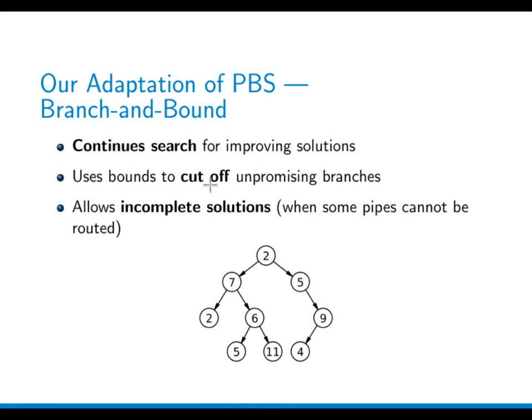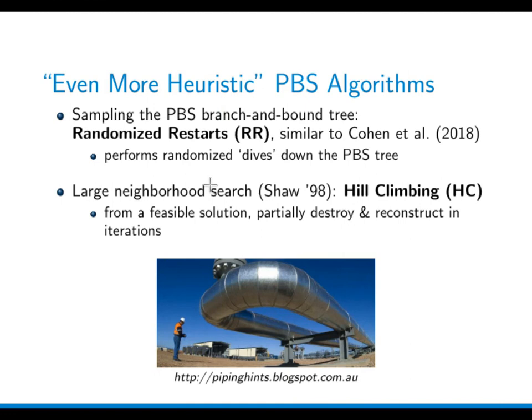We also looked at two heuristics — algorithms which can be called even more heuristic than PBS. One is randomized restarts, which is sampling of the conflict tree by doing randomized dives down the tree iteratively. The other is large neighborhood search, which we call hill climbing: we take a feasible solution and reconstruct some part of it, with various versions of how to construct that feasible solution.